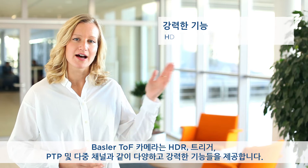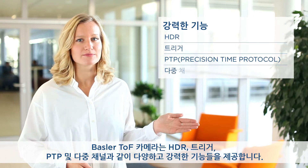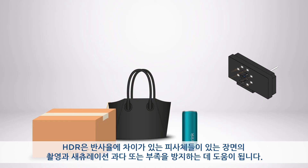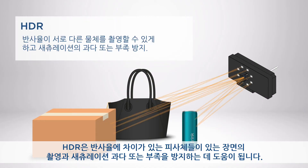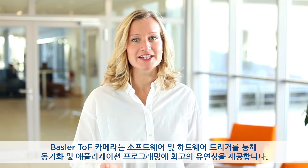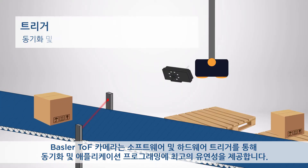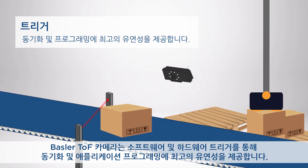The Basler TOF camera offers a broad variety of powerful features like high dynamic range, trigger, precision time protocol, and multi-channel. HDR helps you to capture a scene with objects of different reflectivity and helps to avoid over- and under-saturation. The Basler TOF camera offers a software and a hardware trigger for highest flexibility in terms of synchronization and programming your application.